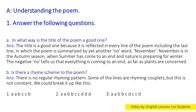Now come to the exercises. Section A: Understanding the poem. Answer the following questions. Question A: In what way is the title of the poem a good one? Answer: The title is a good one because it is reflected in every line of the poem, including the last line in which the poem is summarized by yet another 'no' word — November. November is in the autumn season when summer has come to an end and nature is preparing for winter. The negative 'no' tells us that everything is coming to an end as far as plants are concerned.